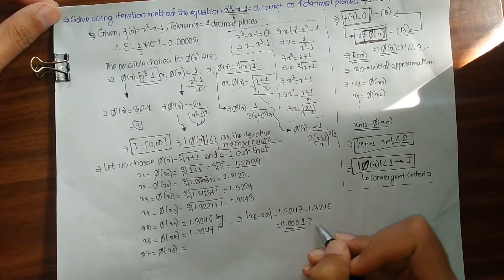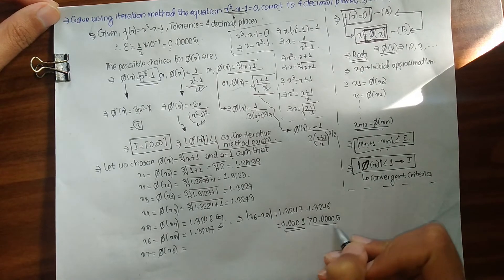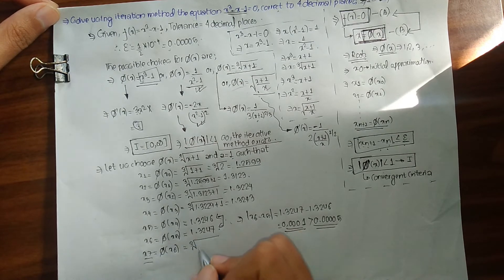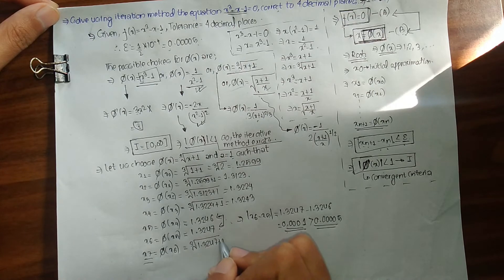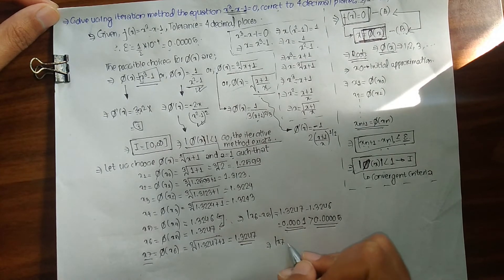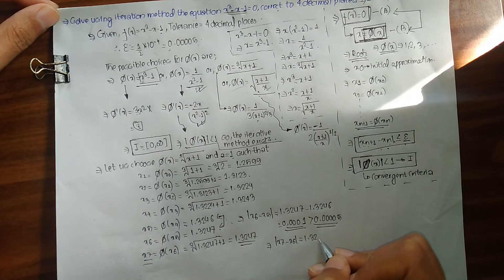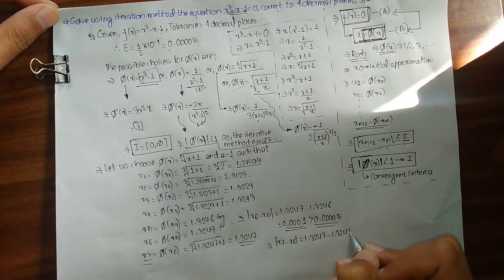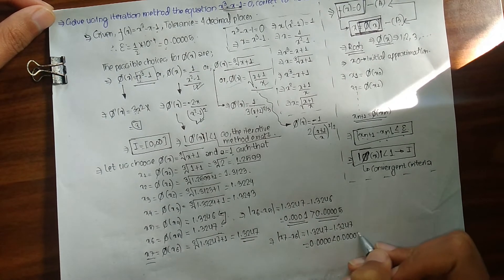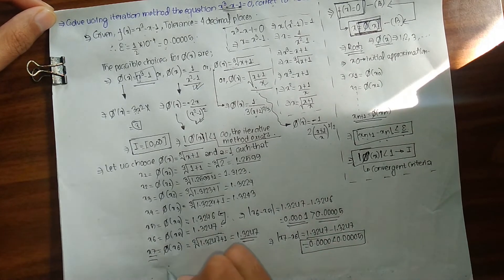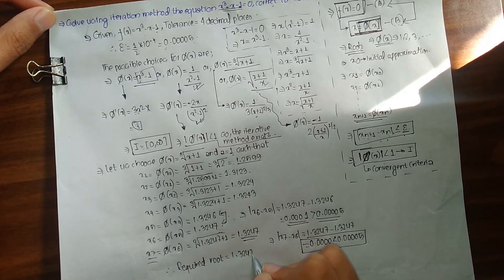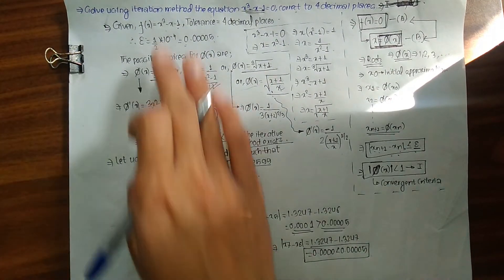Checking convergence: |x₆ - x₅| = |1.3247 - 1.3246| = 0.0001, which is still greater than 0.00005. So we continue to x₇ = ∛(1.3247 + 1) = 1.3247. Now |x₇ - x₆| = |1.3247 - 1.3247| = 0.0000, which is less than 0.00005. Therefore, our required root is 1.3247.